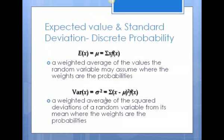Think about calculating the expected value as the weighted average, where the weights are the probabilities. E(X) is the expected value of X — the expected outcome given all of the data. That is equal to mu, the expected value. This is kind of like X-bar, except we use mu because we're dealing with non-uniform probability distributions. The way you find this expected value is the sum of each observation times its respective probability, where f(x) is the probability corresponding to that x observation.